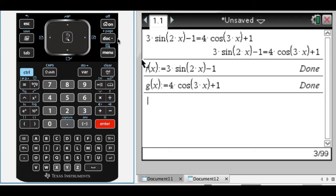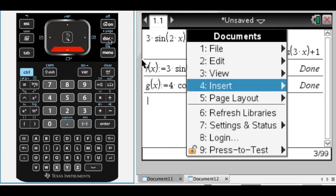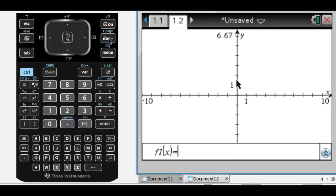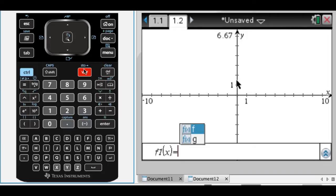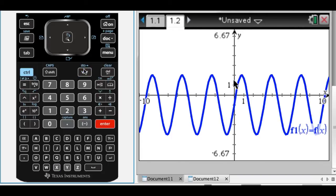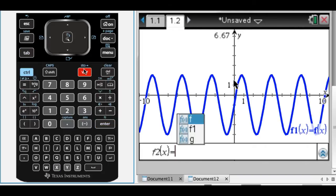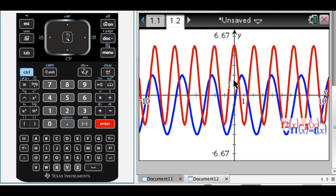And so what I'll do now is I want to insert a graphing page, and I want to graph f of x, so I'm going to press var, and you can see all the variables that are defined, f of x, and then press tab, press var, and g of x. So I get that.